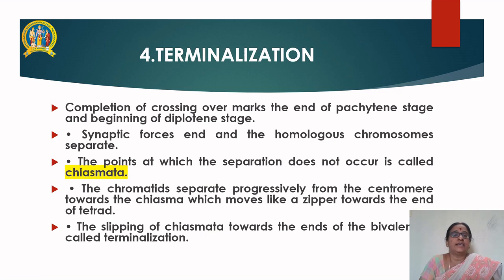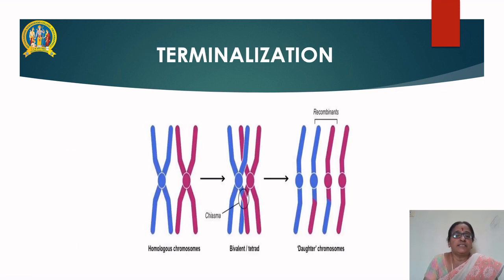Let us see the process called terminalization. Completion of crossing over marks the end of the pachytene stage and the beginning of the diplotene stage. Synaptic forces end and the homologous chromosomes separate. The points at which separation does not occur are called chiasmata. The chromatids separate progressively from the centromere towards the chiasma, which moves like a zipper towards the end of the tetrad. This slipping of chiasmata towards the end of the bivalent chromosome is called terminalization. The bivalent tetrad begins to separate and becomes a single filament, and the recombinant pairs rejoin to form a new recombinant variety.